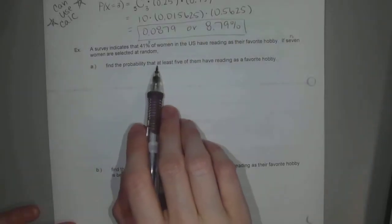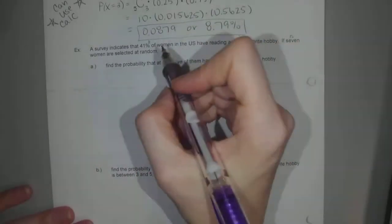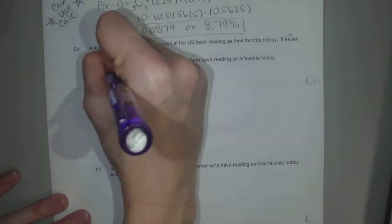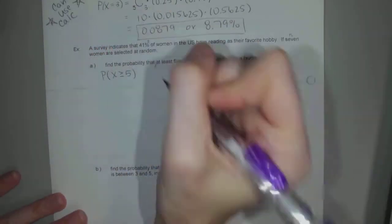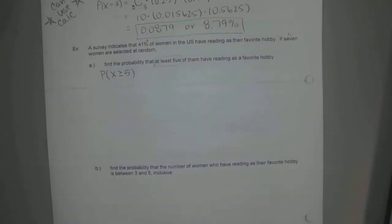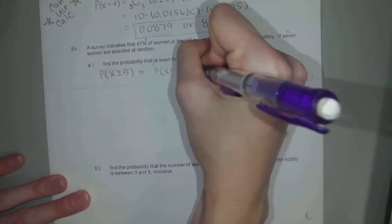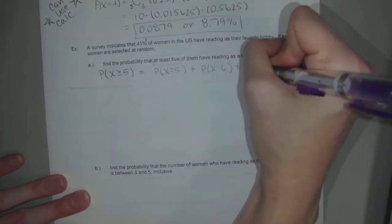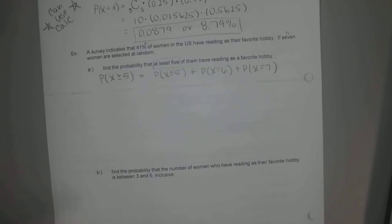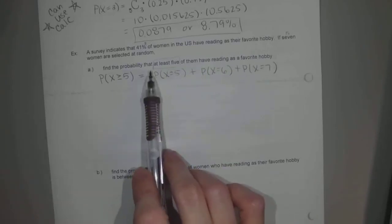So part A, find the probability that at least five of them have reading as a favorite hobby. This is kind of interesting, because we see that word at least, but it's not at least one, it's at least five. So that is P of X being greater than or equal to five. At least five means five say yes, I like reading, or six say yes, or seven say yes. Do I need to go past seven? Why not? Because I only asked seven. So at least five out of seven would be the probability of X equaling five, plus the probability of X equaling six, plus the probability of X equaling seven.